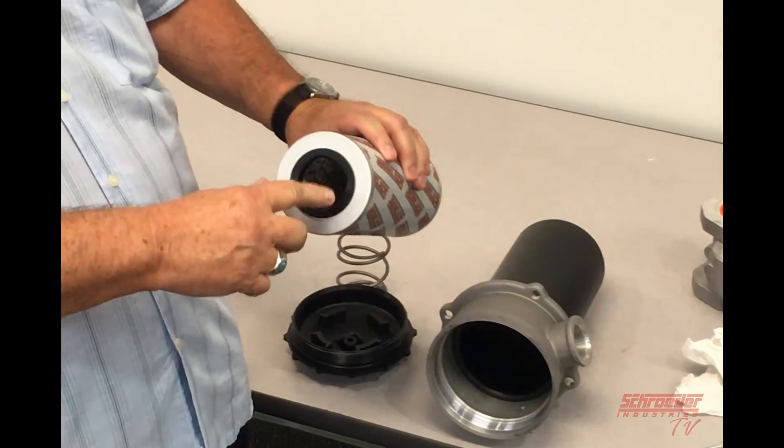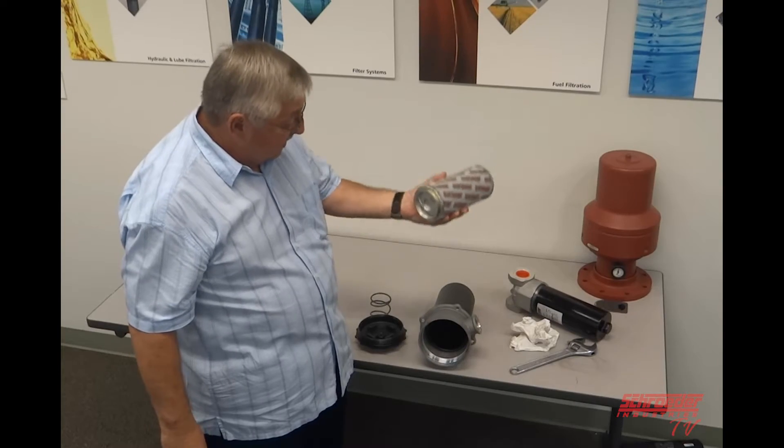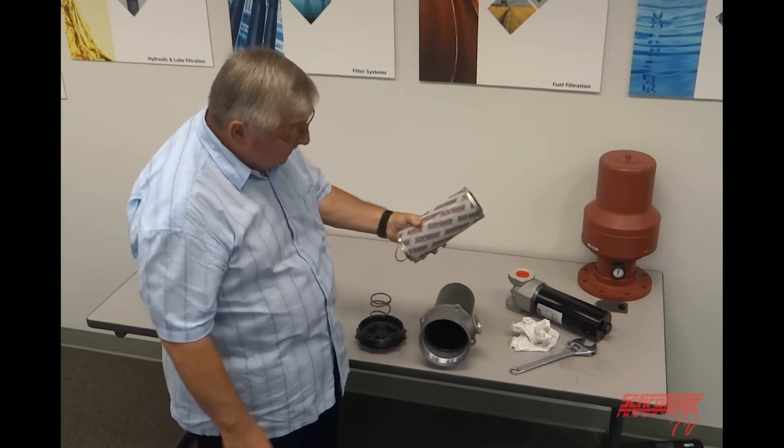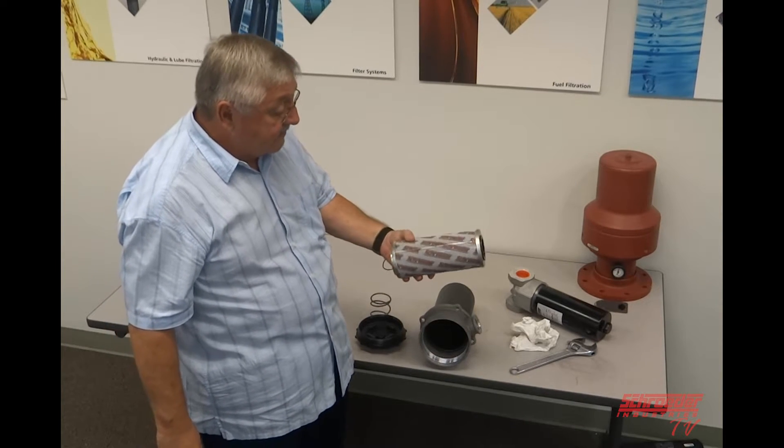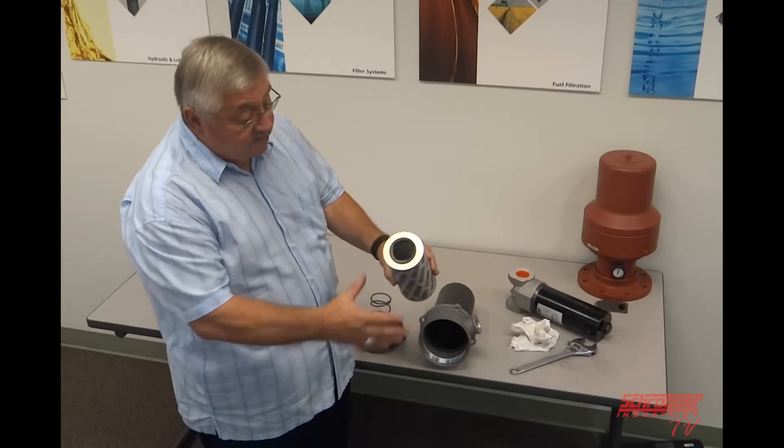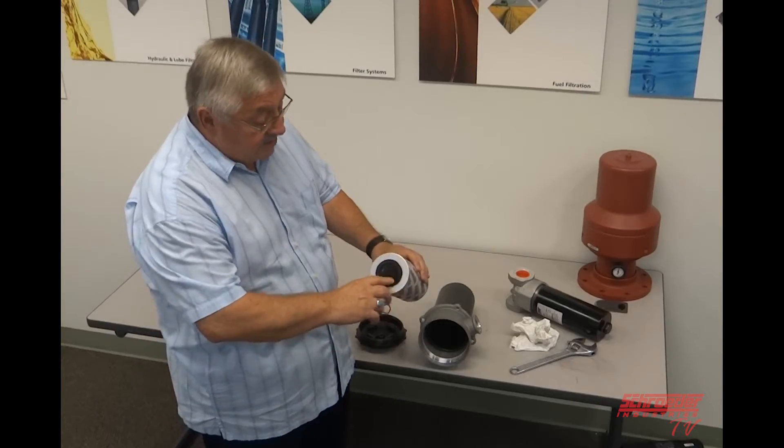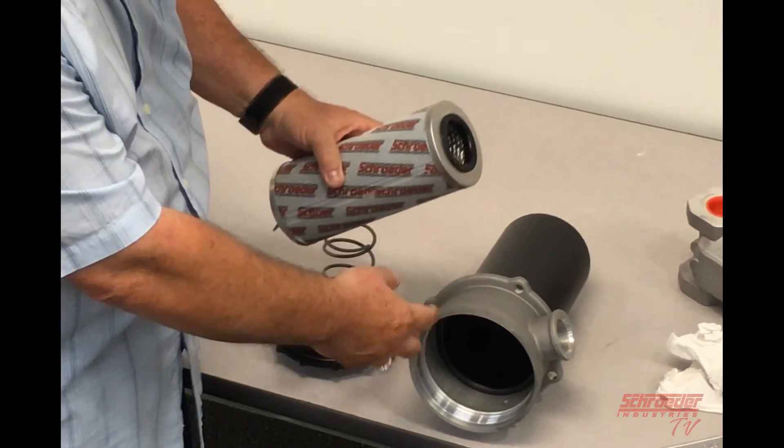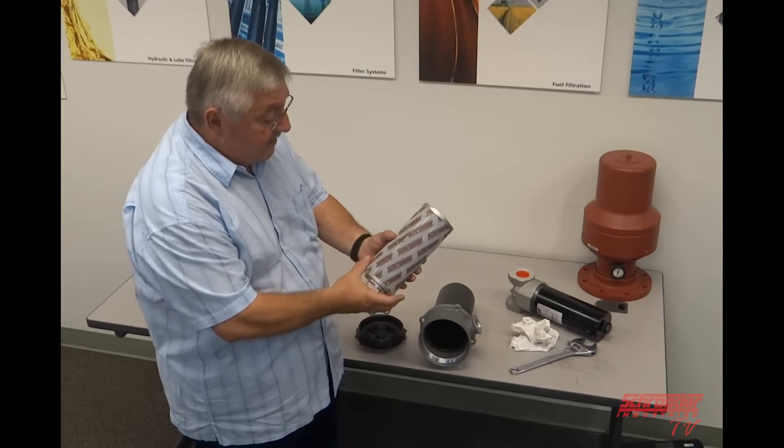You notice this has one of our geo seal, which is a square grommet. When you get the new element, of course you take this and you put it in your pan to drain any residual oil that might be in it. The new element comes with the grommet already attached. What you got to do is just lube the grommet with a little bit of oil from your tank or if you have a special lube you use. Cosmolube, you lube it.